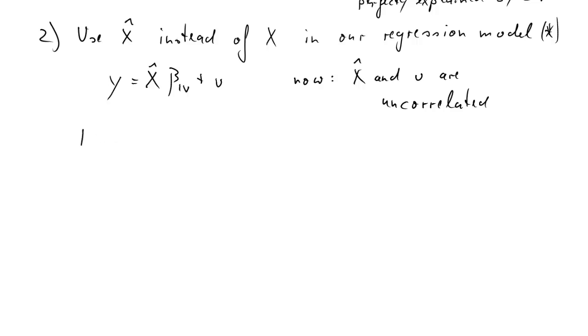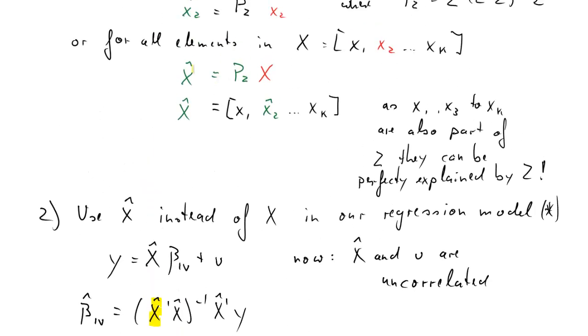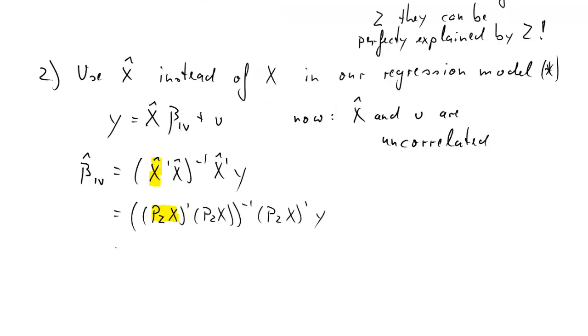By construction the X-hats are going to be uncorrelated to u. That means we can basically apply OLS to this new model. And if you apply OLS to this new model, what's going to be our OLS estimator for the beta IV? It's going to be beta-hat IV as you see it, your usual formula just with X-hat. Now X-hat of course you know is equal to Pz times X. So we will just replace the X-hats everywhere with Pz times X. So this equality comes from what we discussed before, how we derive the X-hats.